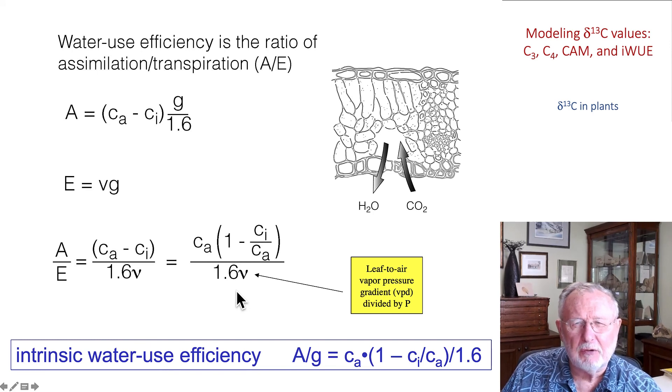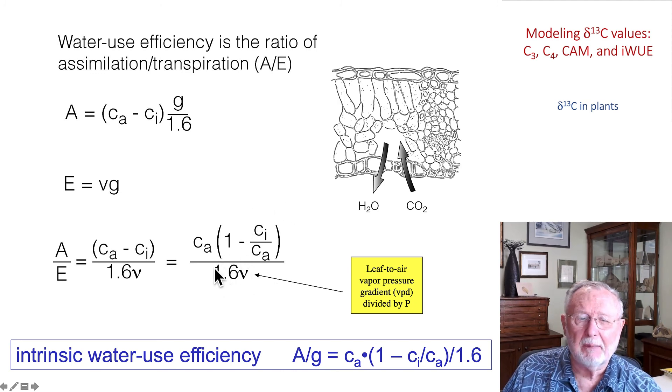Carbon isotope ratio can't measure that because carbon isotope ratio will give you only an indication of the Ci to Ca ratio, not of the vapor gradient.